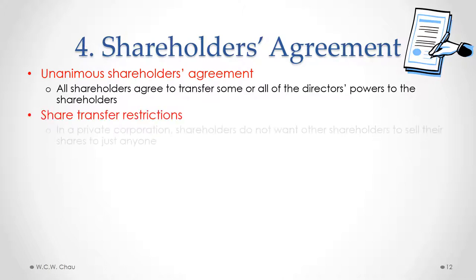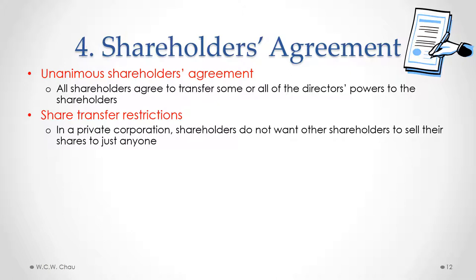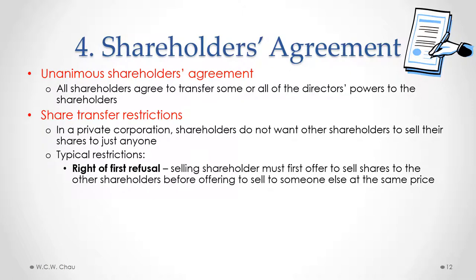In terms of share transfer restrictions, in a private corporation shareholders usually do not want other shareholders to sell their shares to just anyone. A typical restriction is a right of first refusal: if a shareholder wants to sell their shares and receives an offer from someone else, they must first offer those shares for sale to the other shareholders of the corporation at the same price that the outside person is willing to pay.